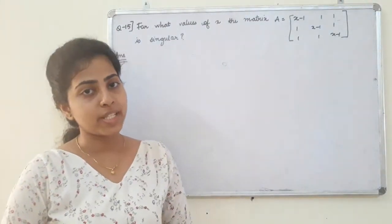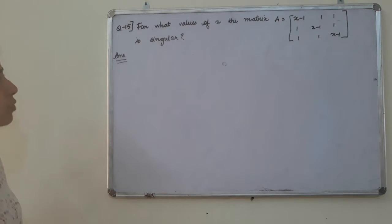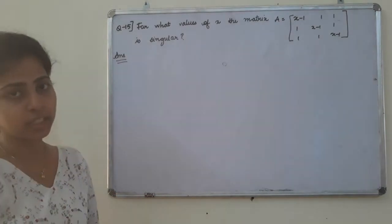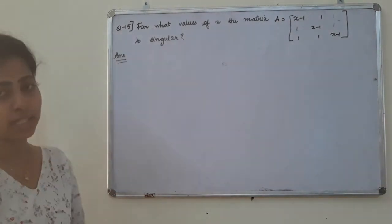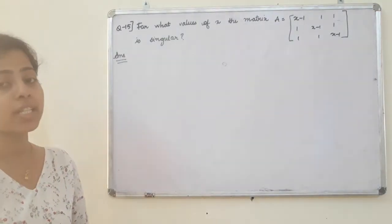Now we have a question. Question number 15: For what values of x is the matrix A singular? We have a 3 by 3 matrix. That matrix is singular.